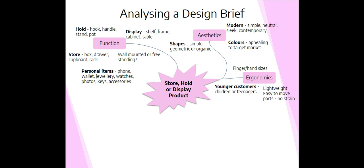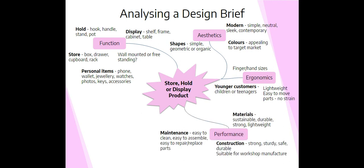Performance is the next design issue to analyze. The brief does not provide any specific information on performance aspects, so you will need to make suggestions based on your knowledge. For this example, important aspects of performance that will affect this design are the materials, construction, and maintenance. The suggestions you make here will help you plan your research, so do not overlook this design issue even if the brief isn't specific.